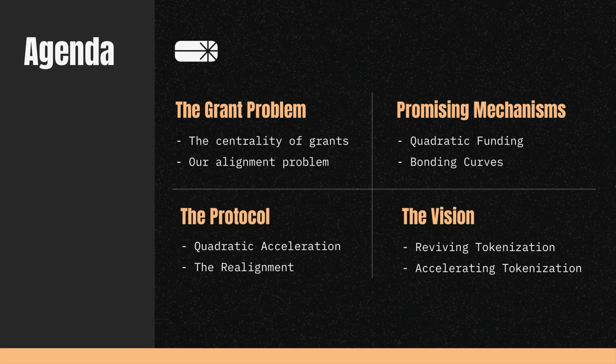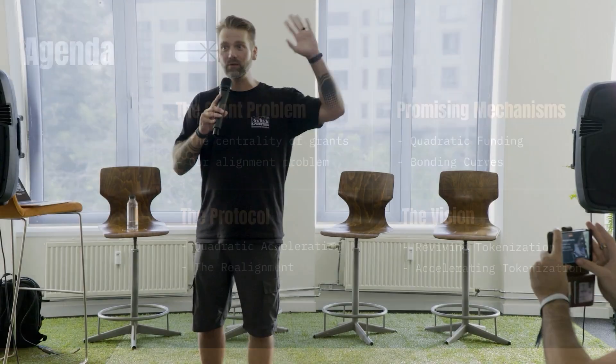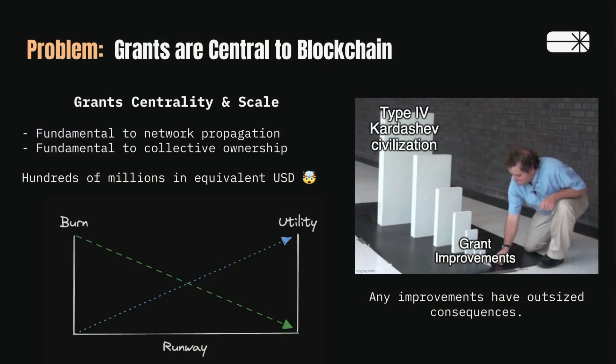So the context of the grants problem. You've heard of the alignment problem in AI — how do you get the machines doing what we want them to do? I think there's something like a grants alignment problem. Just to speak on how central grants are to this whole thing: if you boiled it down, you could say all blockchains effectively govern two things — protocol rules and value flows. Because that's how a chain autonomously propagates and sustains itself.